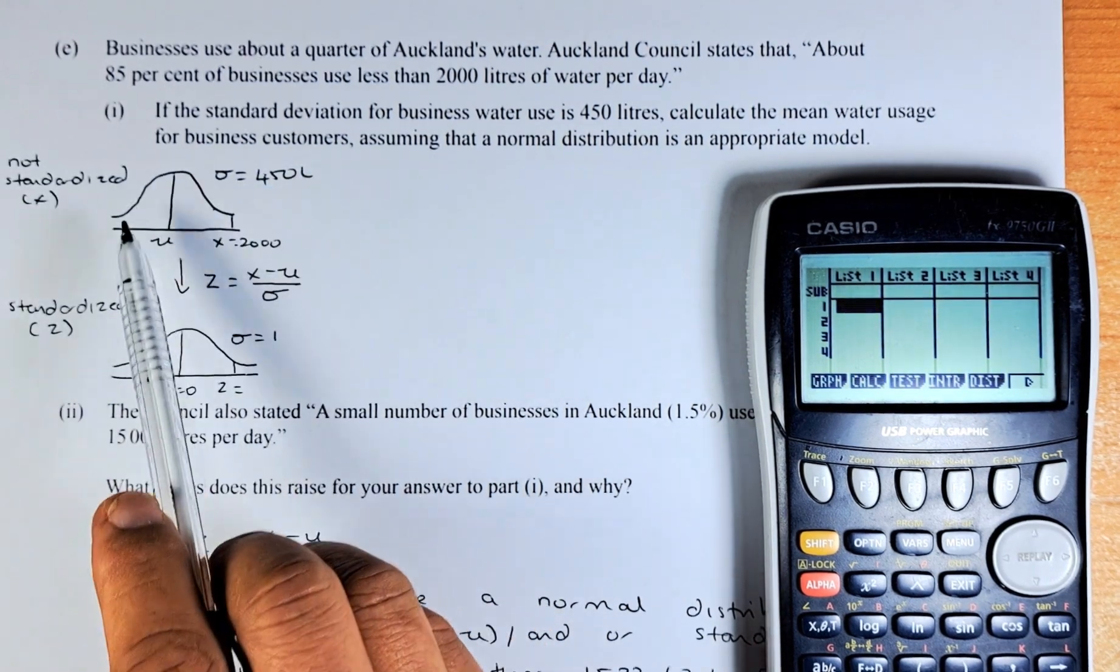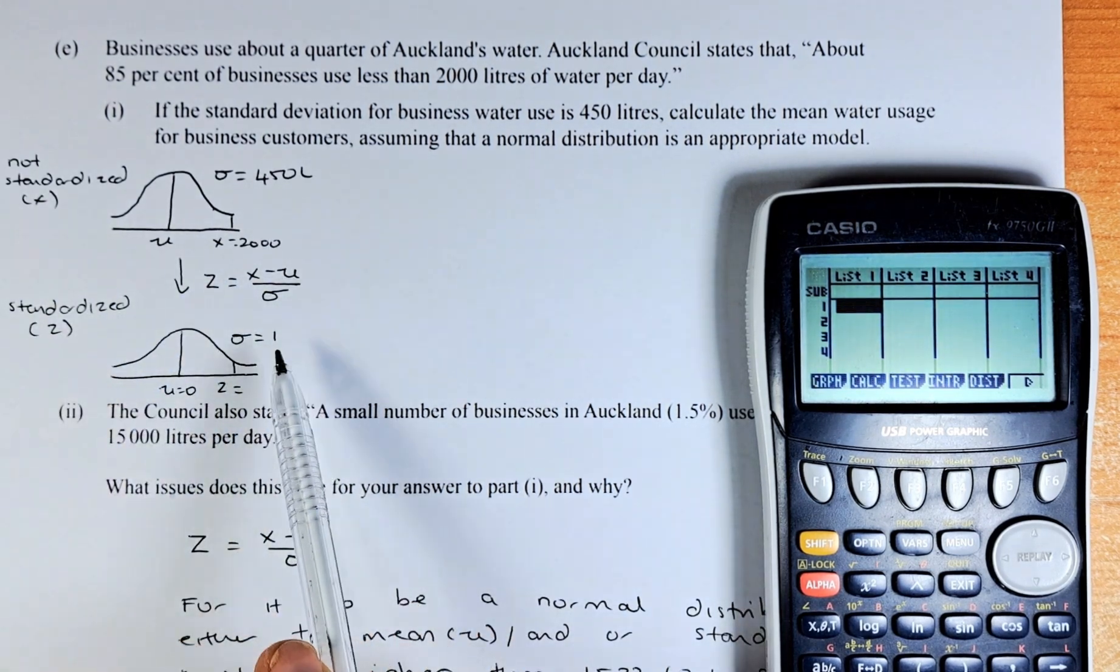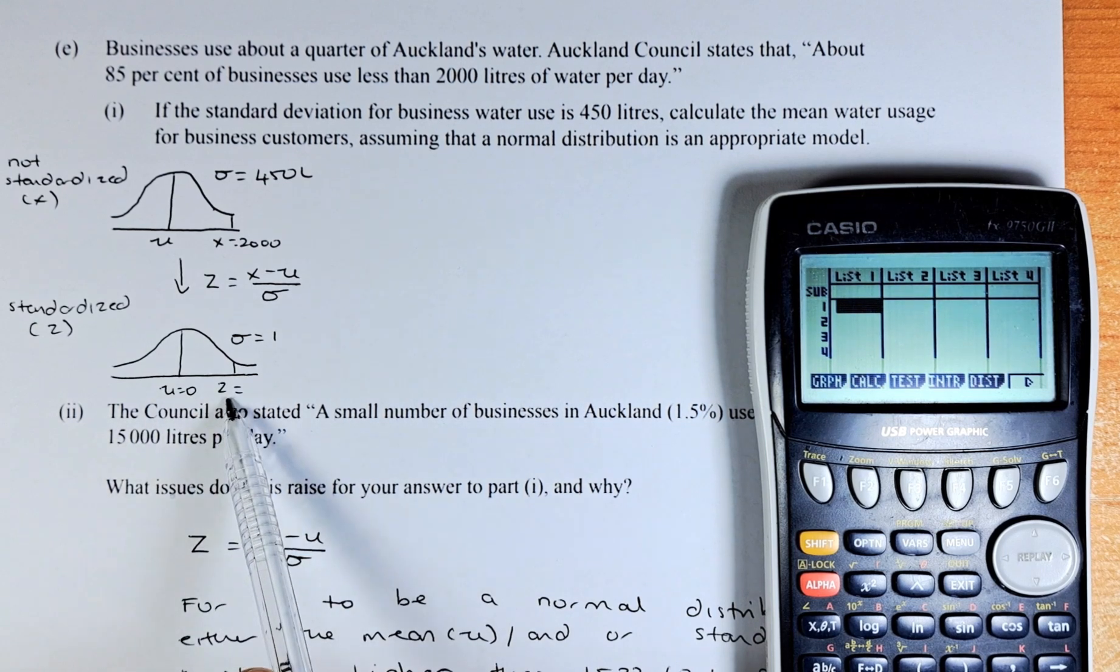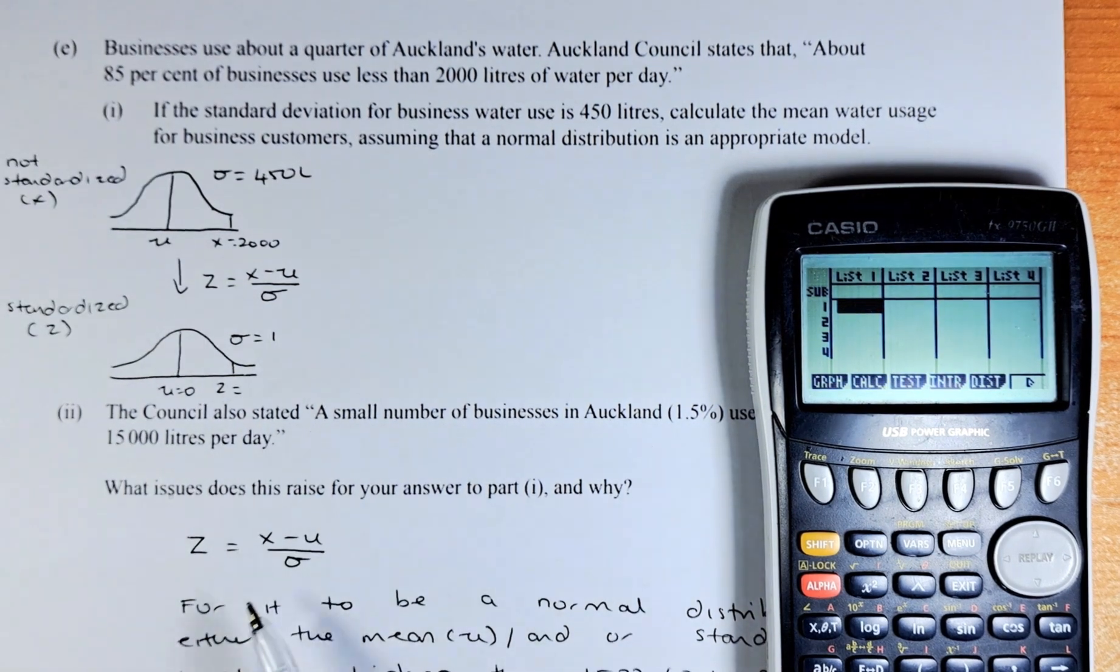Before we can calculate the mean here, we have to use the standardised form where sigma equals to 1, nu equals to 0 and we define the value of Z or the standardised X value. To do that, we are going to put in the calculator.